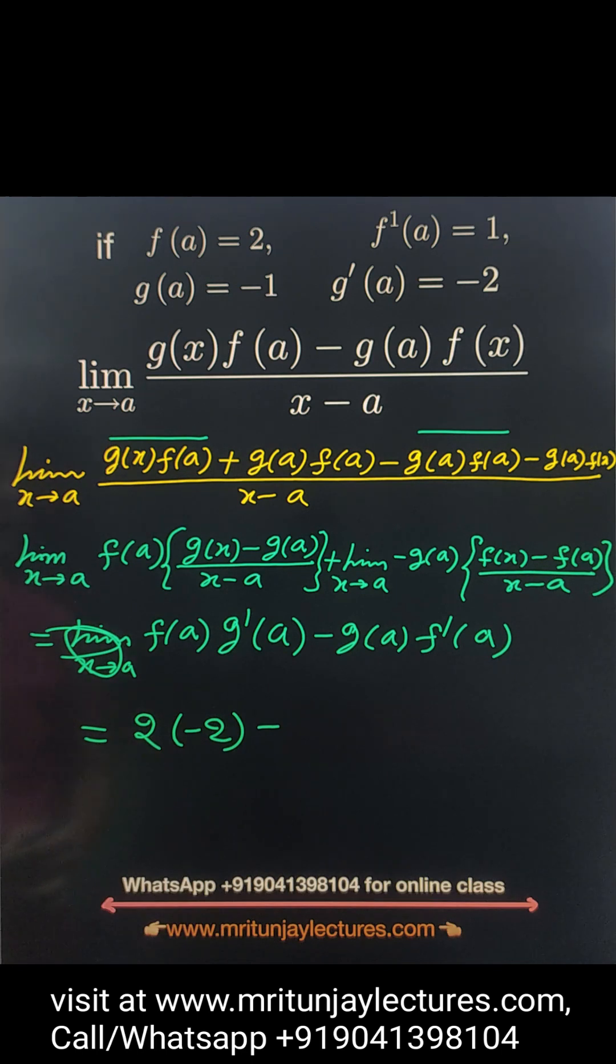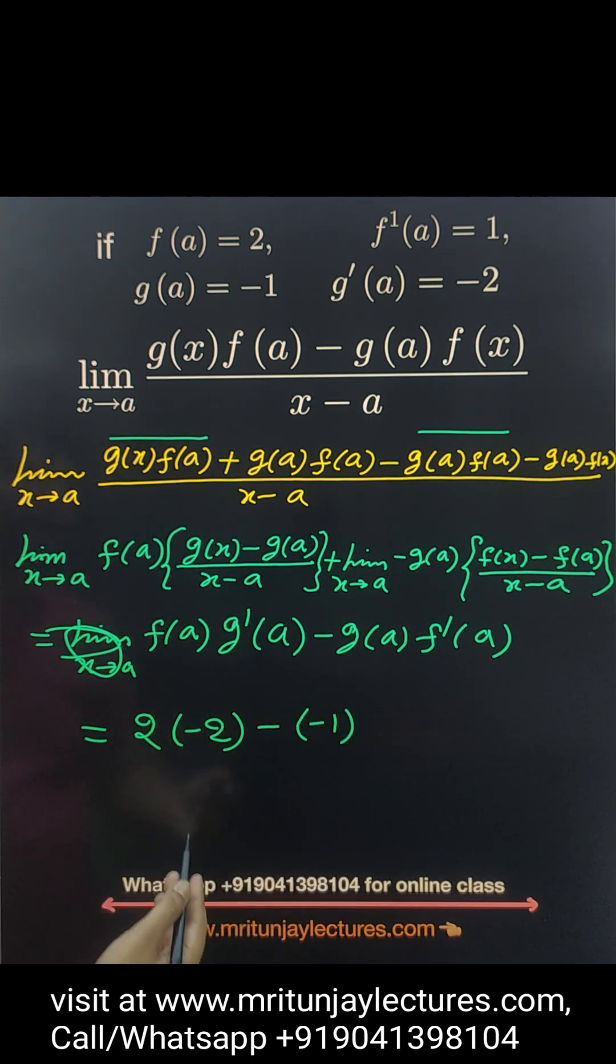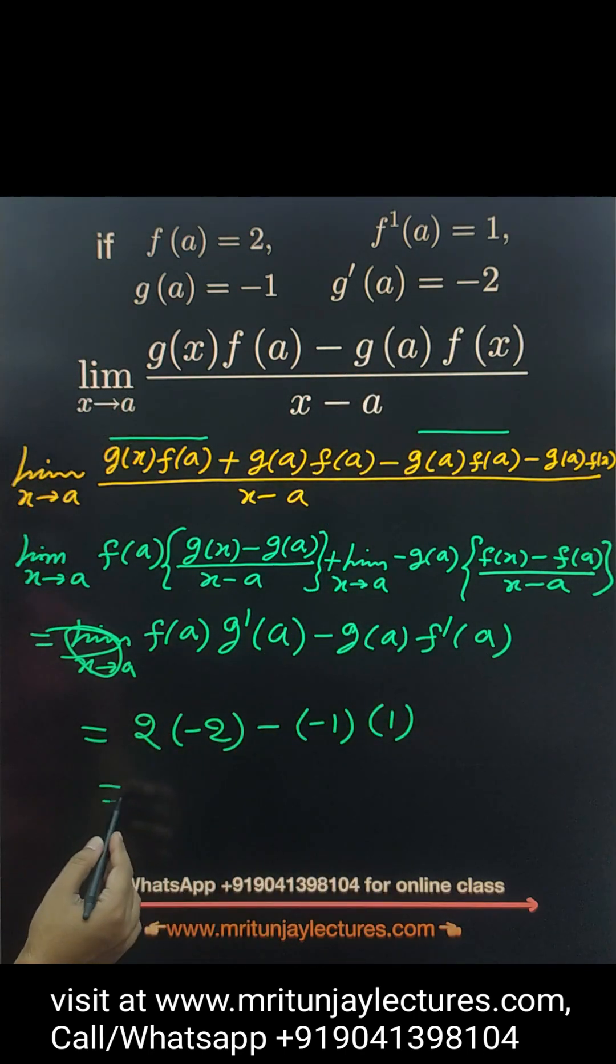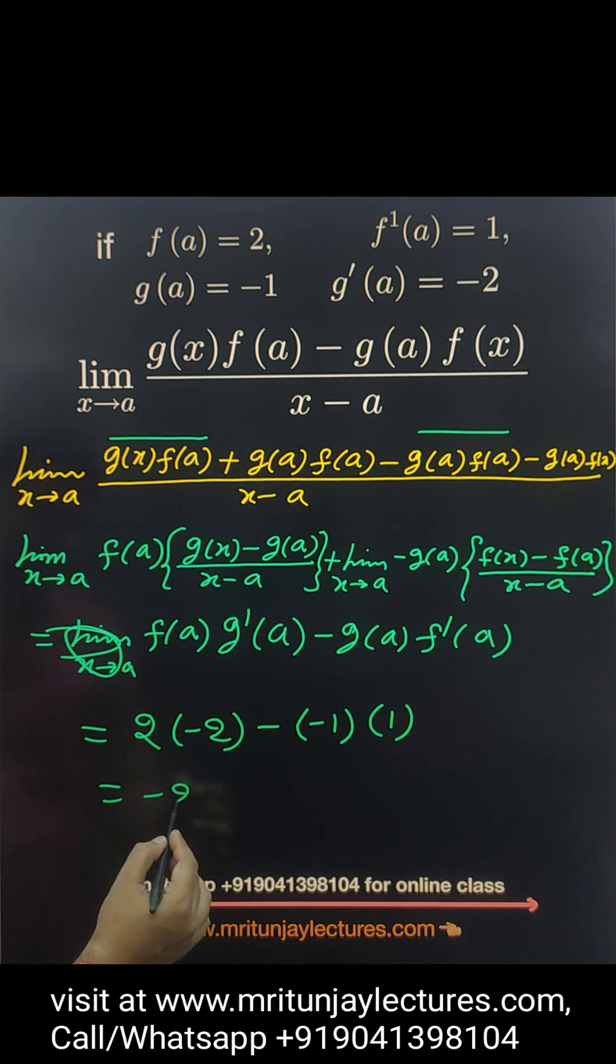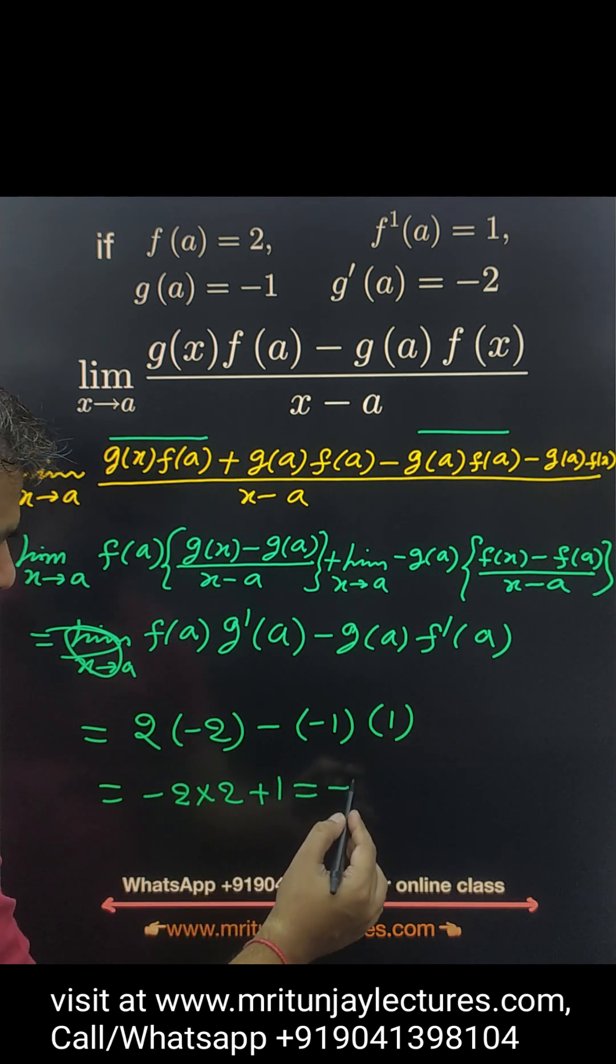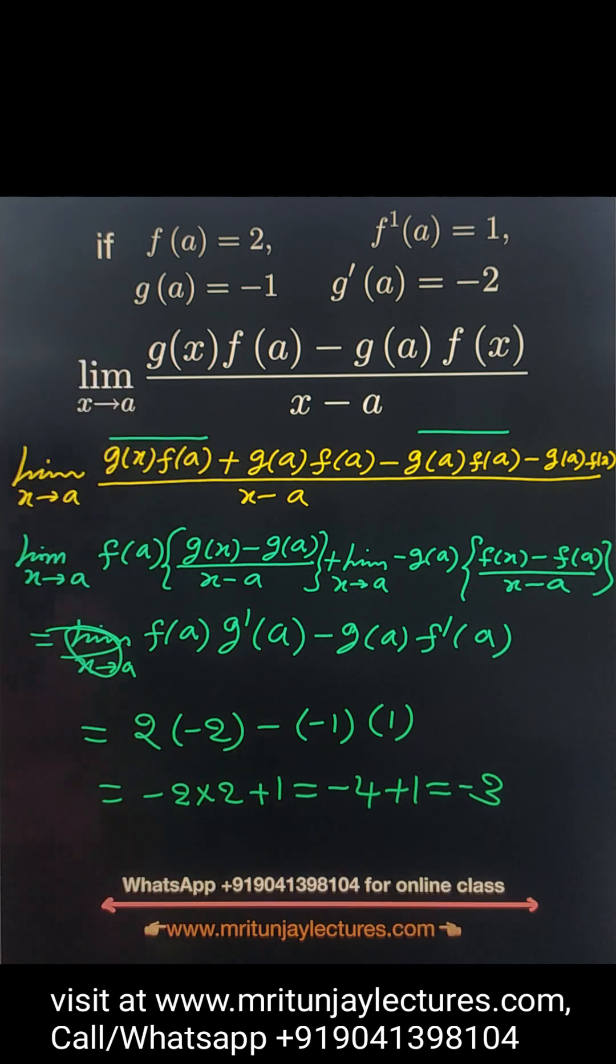Minus g(a) is minus 1, f prime a is 1. What about that value? That is minus 2 into 2 and that one is minus minus plus. So minus 4 plus 1, that is minus 3 is the right answer.